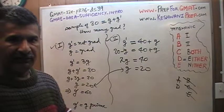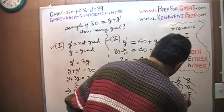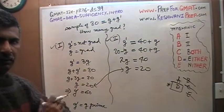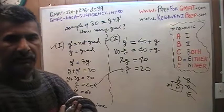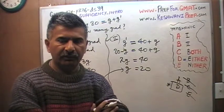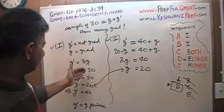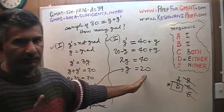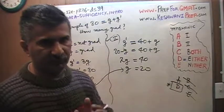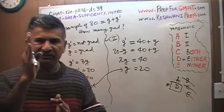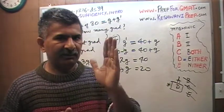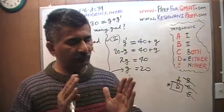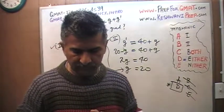Since either statement by itself is enough to answer the question, the correct answer is D. Notice also that the information is consistent — both statements give us 20 graduates. I have seen many fake exams where one statement gives 20 graduates and the other gives 30, but that is not the case on the GMAT. The information in the two statements is always consistent; they substantiate each other and do not contradict each other.